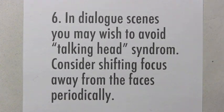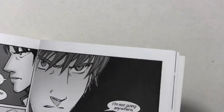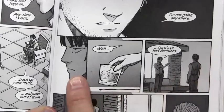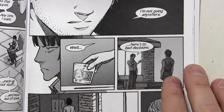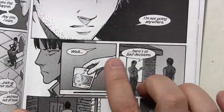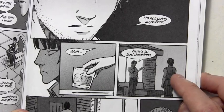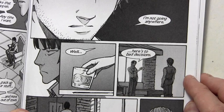Number six, which is a continuation of the last point: in dialogue scenes, you may wish to avoid talking head syndrome. Consider shifting focus away from the faces periodically. If you have face after face after face in a dialogue scene, it can get very repetitive. The aerial view is one way of spicing things up. Here's another: this character Landon James reaches down to pick up his glass of scotch, and for one frame we don't see any faces at all — we just see the hand taking hold of the glass. That's another way of getting away from face after face in dialogue scenes. Keep your eyes open for opportunities to cut away from the faces and show something different.